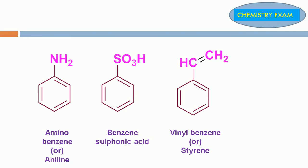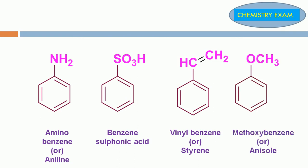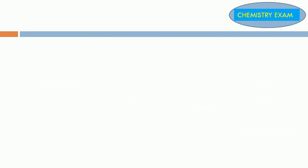CH2=CH2, that is called vinyl. Vinyl substituted benzene is called vinylbenzene or styrene. OCH3 is the methoxy group. Methoxy substituted in benzene ring is called methoxybenzene or anisole. Cyanide group present in benzene ring is called cyanobenzene or benzonitrile.